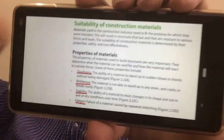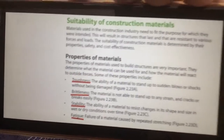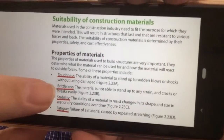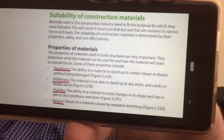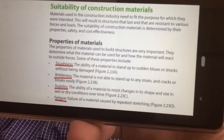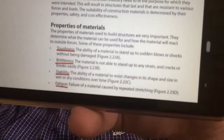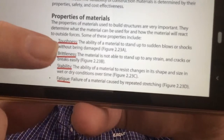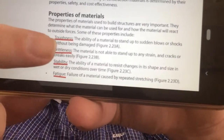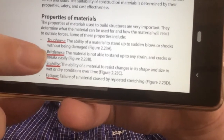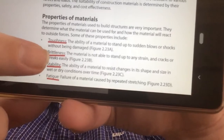The last part is the suitability of these construction materials. They need to fit the purpose for which they were intended, and they're determined by their properties, their safety, and their cost effectiveness. We mentioned toughness — the ability to stand up to sudden blows or shocks without being damaged. Brittleness — where the material is not able to stand up to any strain and cracks and breaks easily.